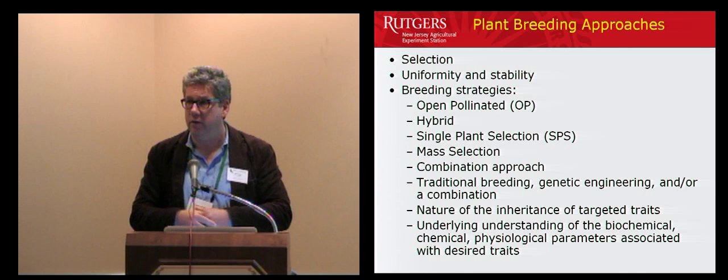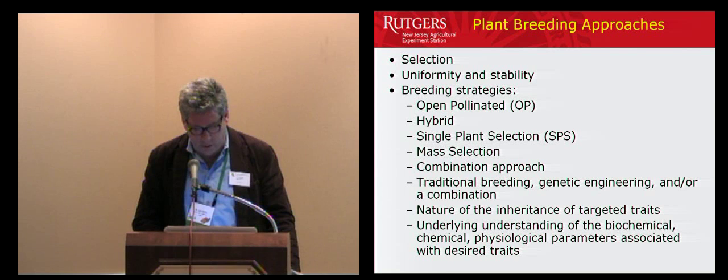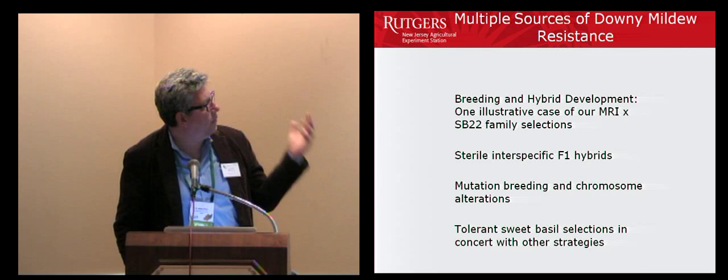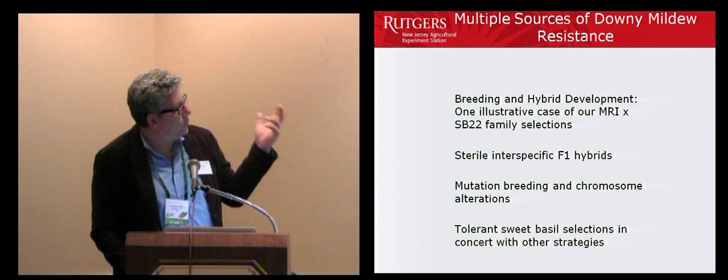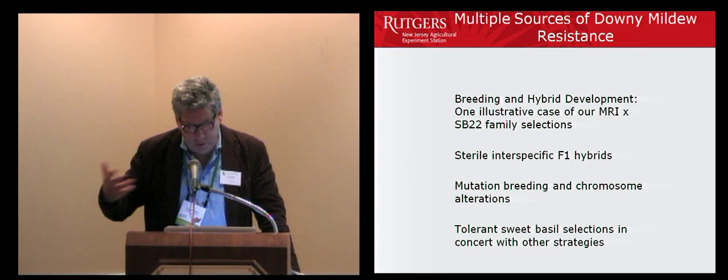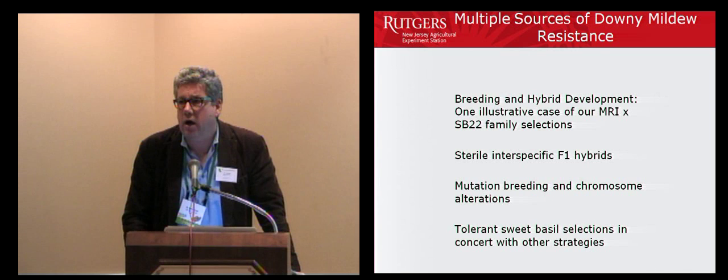Our breeding program is looking at breeding and hybrid development. Robert talked about the MRI crossing with the SB22 family selections. The SB22 is one of Rutgers' longstanding breeding lines for a sweet basil phenotype. The other approach is a sterile interspecific F1 hybrid.